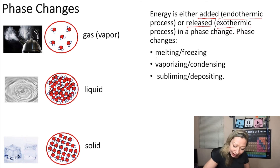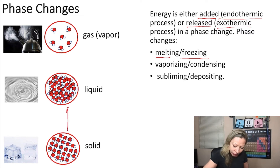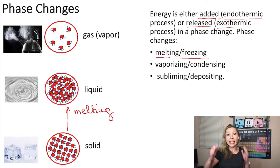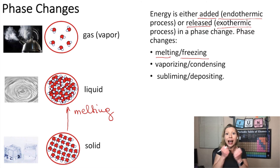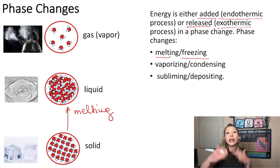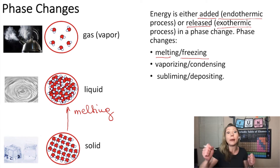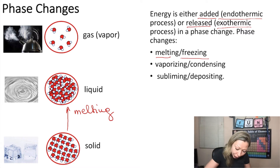Let's start with melting and freezing. When we go from a solid to a liquid state, we are going to have melting. In a solid, molecules are really close to each other and they are vibrating in one place. In a liquid, molecules can pass each other. So we need to add energy so the molecules can gain this mobility. Melting is going to be an endothermic process — energy needs to be added.